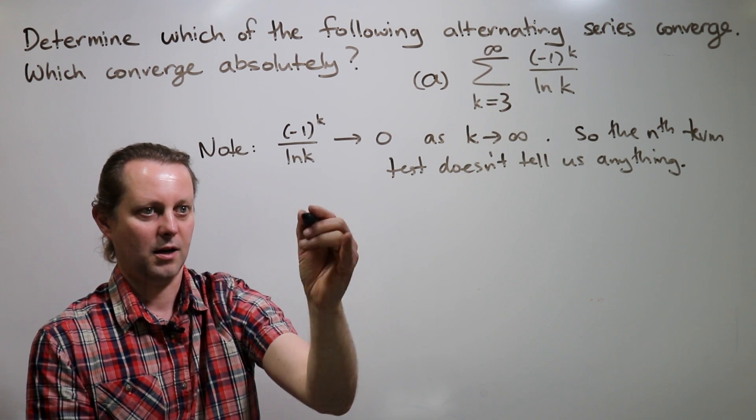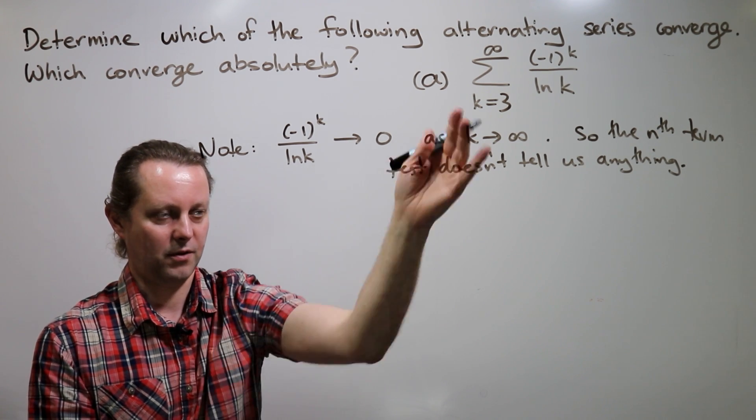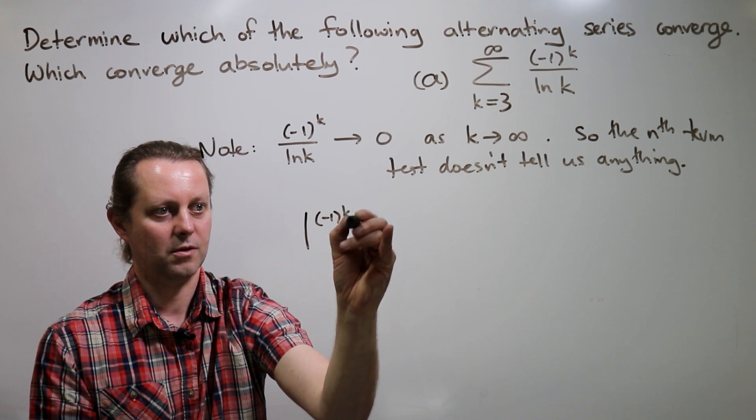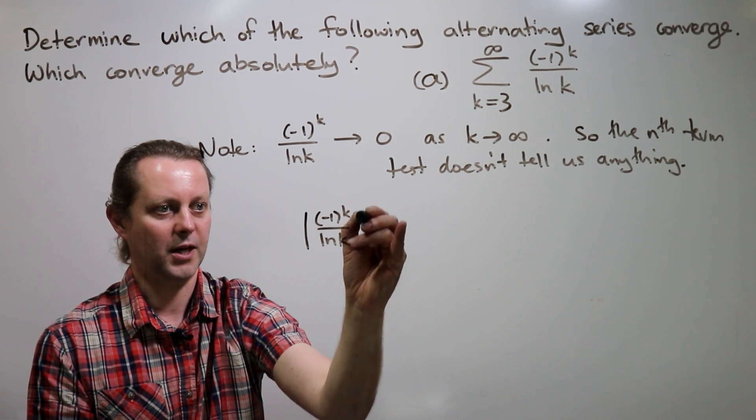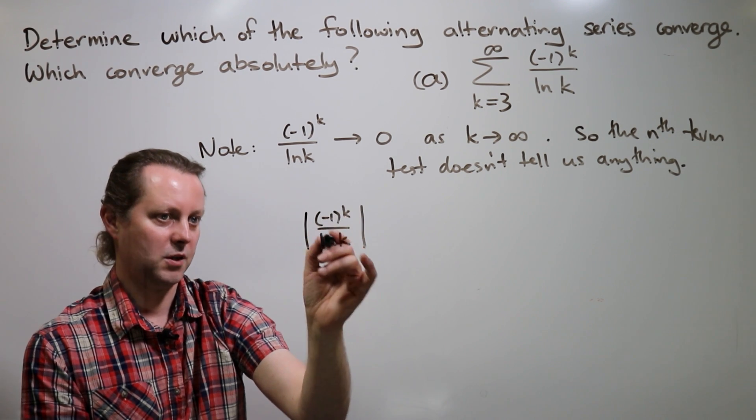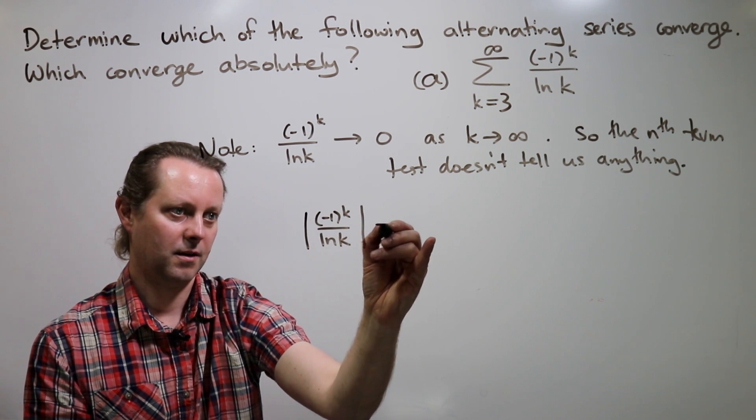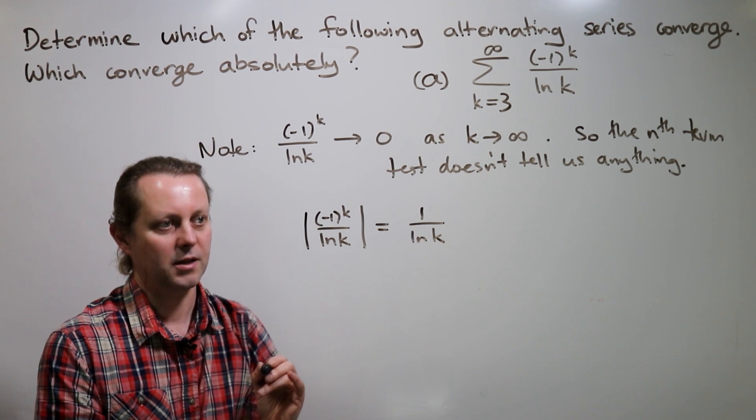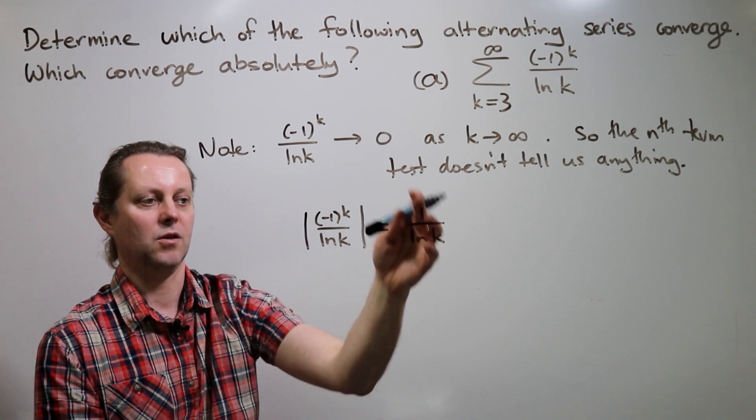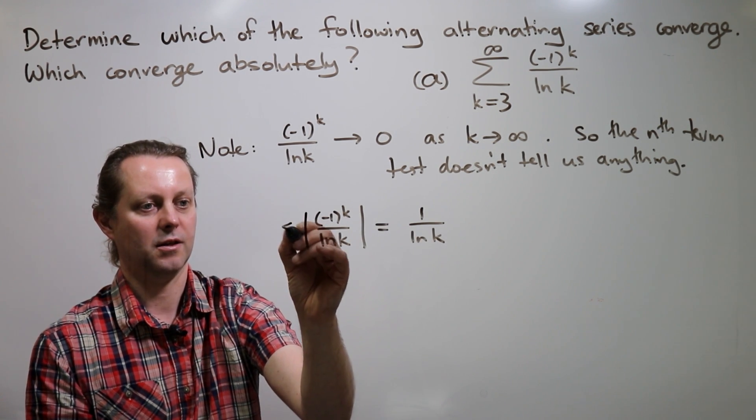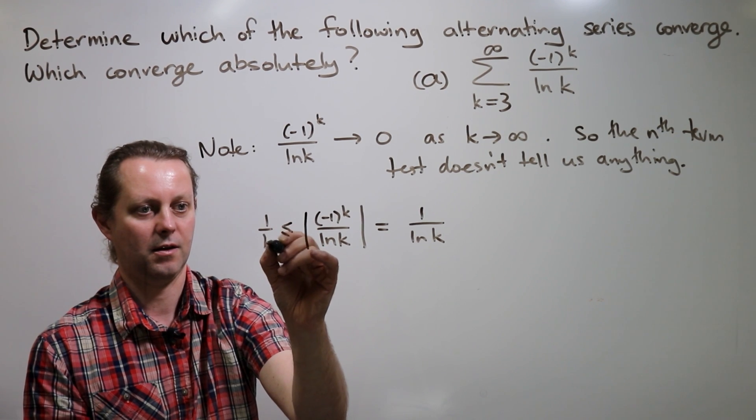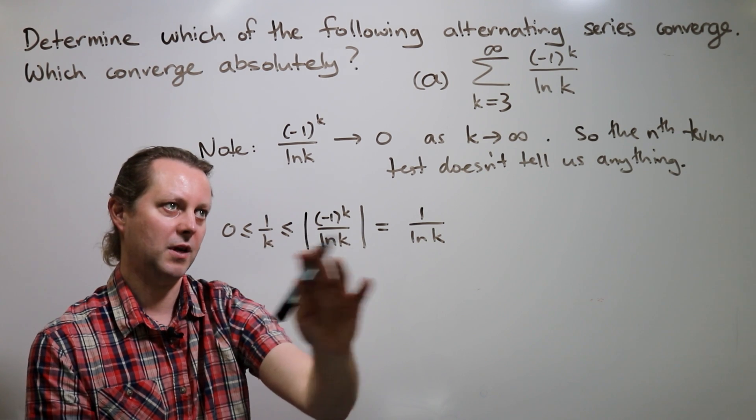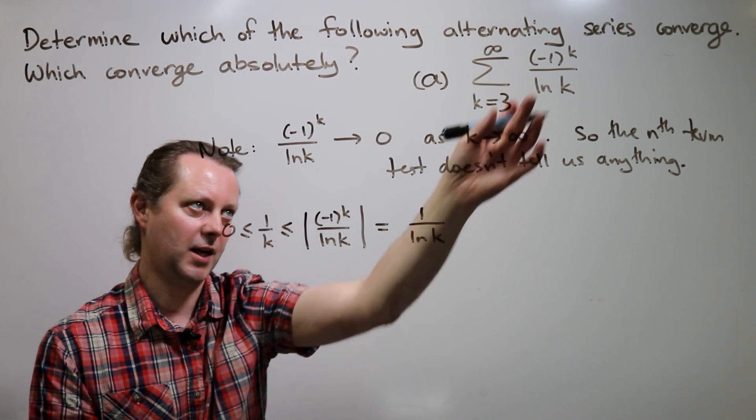And first of all, I'll just note one thing about the size of those terms. So if we take the absolute value of those terms, the absolute value of minus one to the k over ln k, that's equal to one over ln k. And the log of k is always smaller than k. So one over ln k is larger than one over k. And one over k is a positive number. So what we have here,